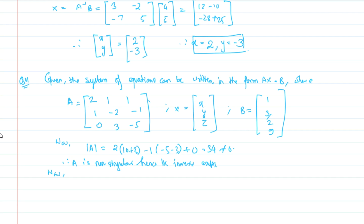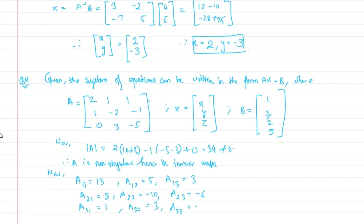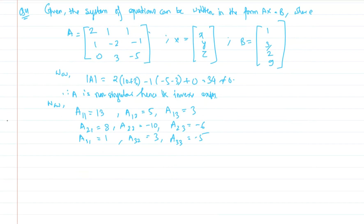Since its inverse exists, we need to find the inverse — that is the transpose of the cofactor matrix. We find the corresponding cofactors and write out the adjoint. Then A inverse is equal to 1 over determinant of A times the adjoint of A — same process as before. The transpose of the cofactor matrix gives us the adjoint.